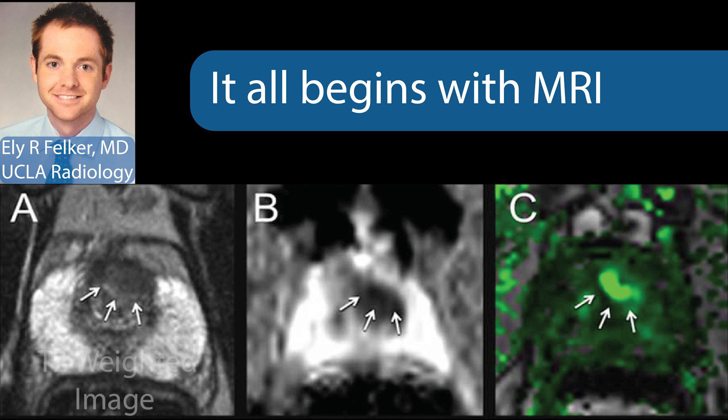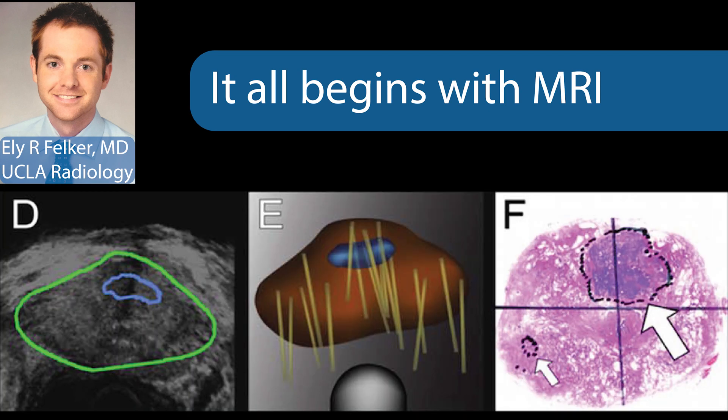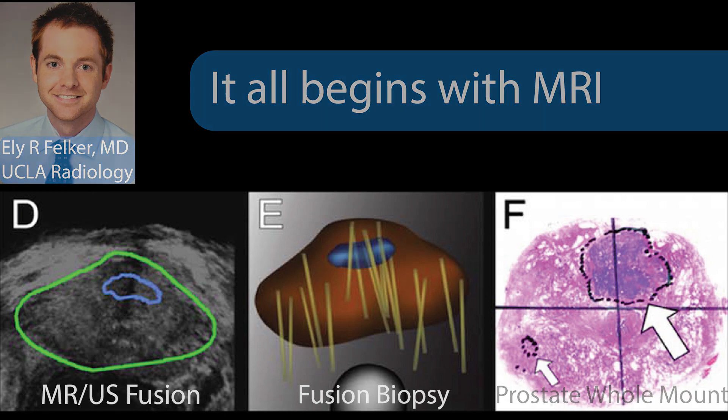Here, the three image sequences reveal in the prostate a highly suspicious grade 5 lesion. MR ultrasound fusion biopsy confirms an intermediate risk Gleason 7 cancer. Biopsy core locations are stored for future reference as needed.